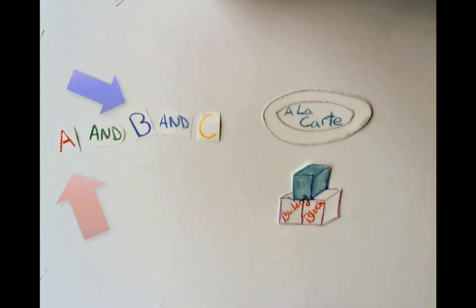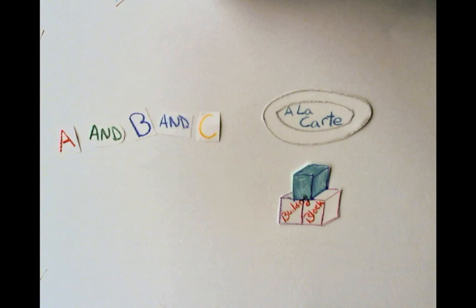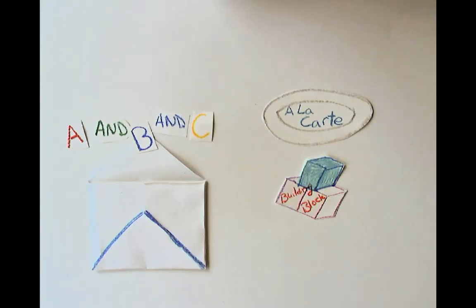One search term per facet should be good enough to get the patron started, and you can always tweak things from there. Most systems have the capability to email a search, complete with the search boxes and all, to a patron.